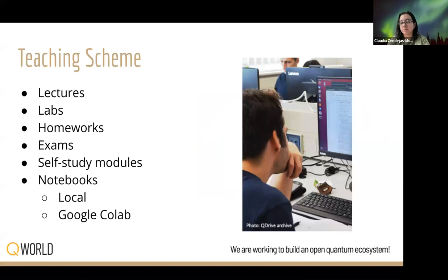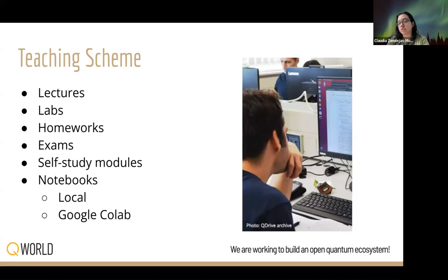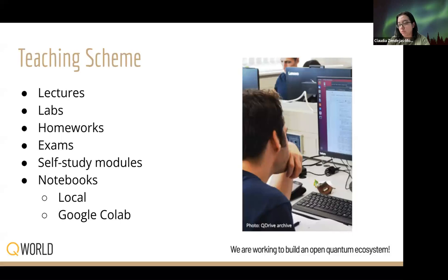The online course will include lectures where the topics will be explained, labs, and homeworks so that students can practice the concepts, exams, and self-study modules from which students can choose which topics they want to study. The way in which notes and exercises are delivered is through Jupyter notebooks, so students can see the description, the code, and the output of the executions all at the same time. These notebooks can be run locally or accessed through Google Colab, which will avoid issues with local software installations.